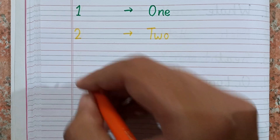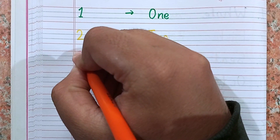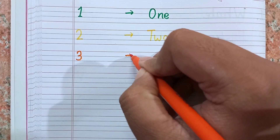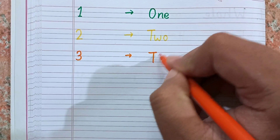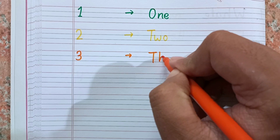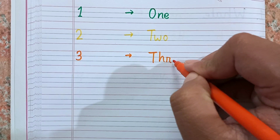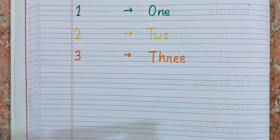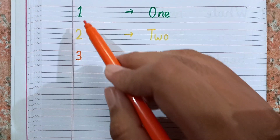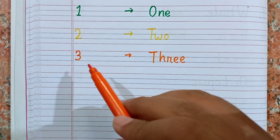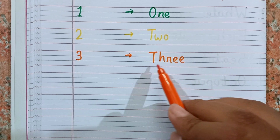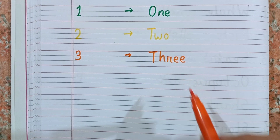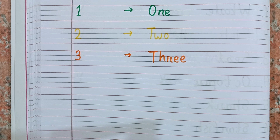I am writing 3. This is 3, and the spelling of 3 is T-H-R-E-E. Remember, kids: 1, 2, 3, and the spelling of THREE is T-H-R-double-E. After 3 I am going to write 4.